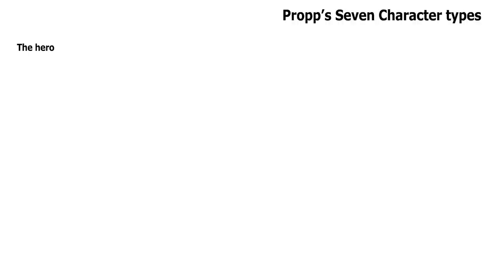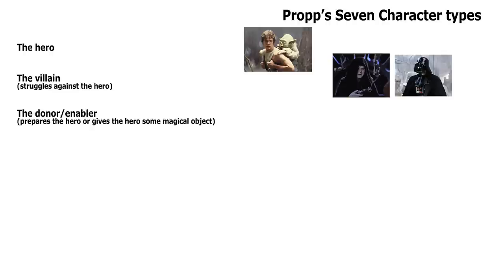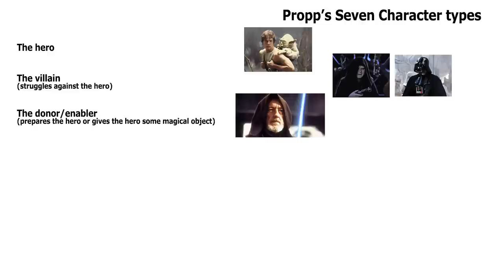So can we still see these in our stories and films today? Let's apply these character types to Star Wars. The first character type is the hero — in this case, Luke. Then we have the villain, who struggles against the hero — in this case the evil emperor, or depending on which episode you're watching, Darth Vader. Then there's the donor or enabler, who prepares the hero or gives them some magical object — in this case Obi-Wan Kenobi, who trains Luke and gives him a lightsaber.